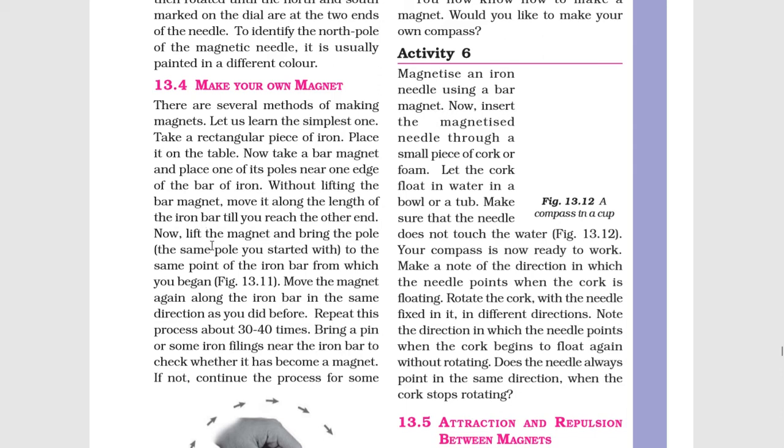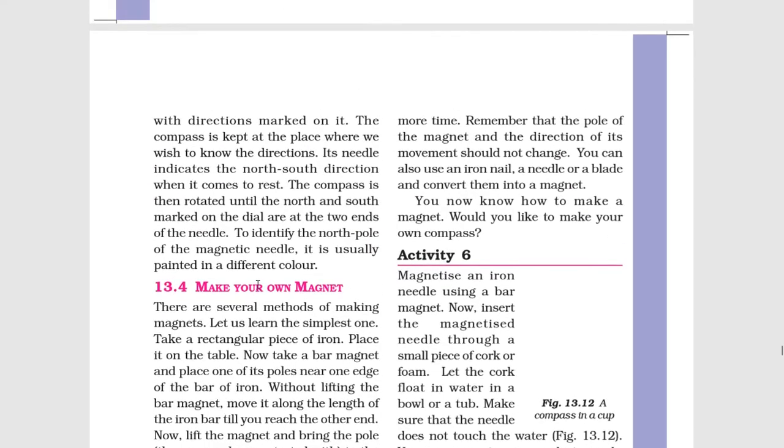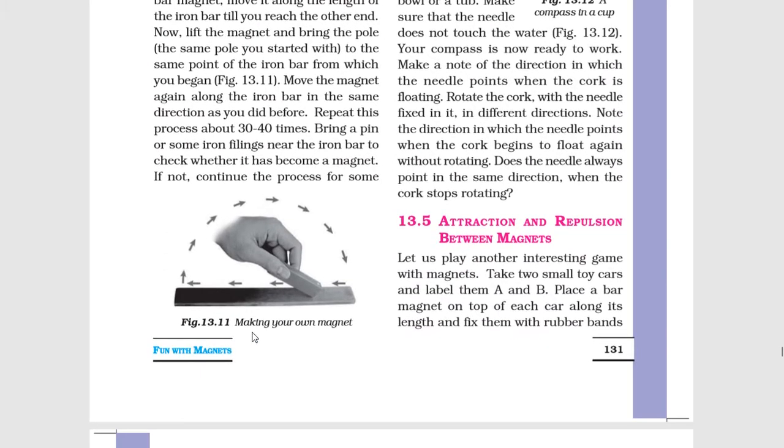Now lift the magnet and bring the pole - the same pole you started with - to the same point of the iron bar from which you began. Figure 13.11 shows making your own magnet. Chumbak ko uthaiye aur usi dhru ko lohe ke tukde ke prarambik sireh par wapas le jaiye.